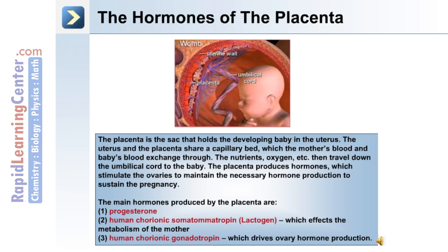The placenta also has endocrine function. The placenta is the sac that holds the developing baby in the uterus, and because the uterus and placenta share a capillary bed where the mother's and baby's blood exchange, this provides the opportunity for endocrine function. Nutrients and oxygen travel down the umbilical cord to the baby, and the placenta produces hormones that stimulate the ovaries to maintain the necessary hormone production to sustain the pregnancy.